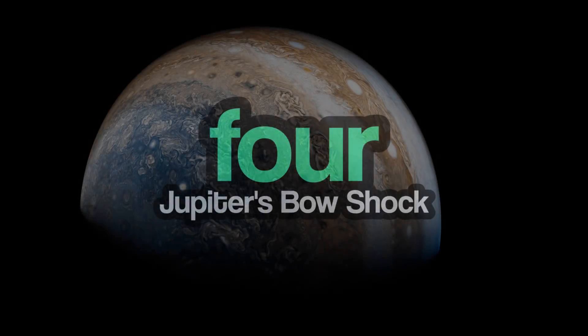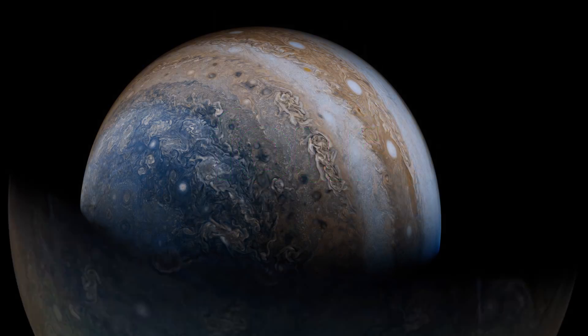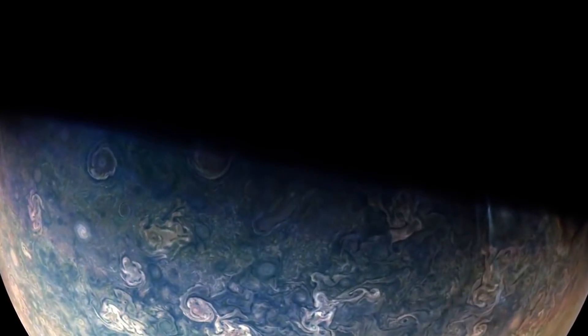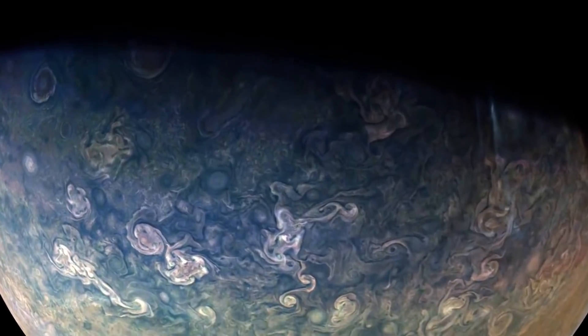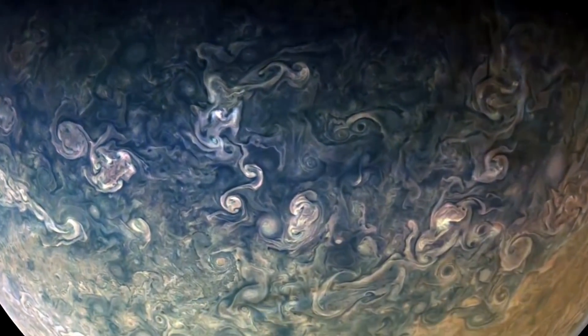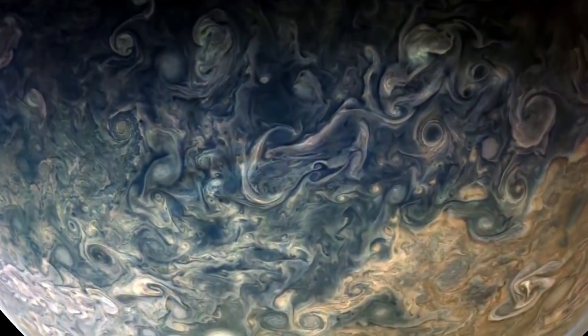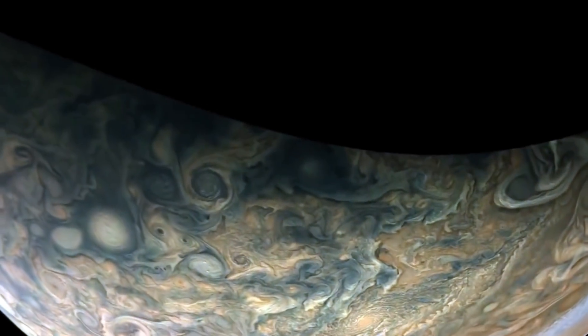Number four, Jupiter's bow shock. I'll begin here by explaining what a bow shock is, specifically when it comes to astrophysics. In simple terms, bow shocks are the boundaries that form between a magnetosphere and an ambient magnetized medium.